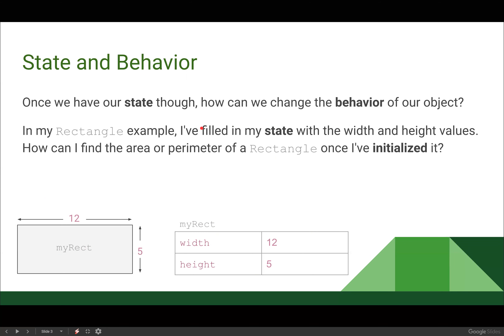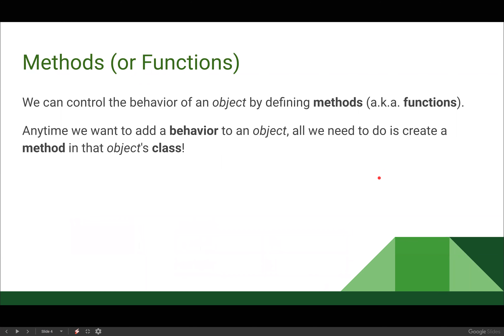Once I have my state, how can I change the behavior of my objects? In this rectangle example, I filled in my state with its width and height — how can I find the area or perimeter once I've initialized it? The answer is methods, also known as functions. We can control the behavior of an object by defining methods.